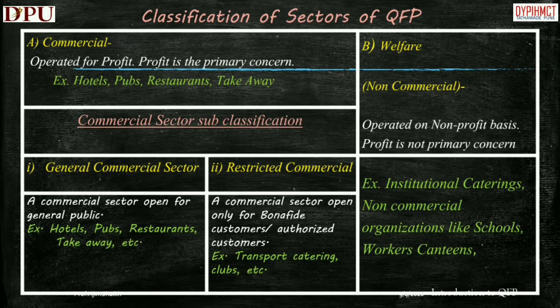The commercial sector is further classified as the general commercial sector and the restricted commercial sector of quantity food production. The general commercial sector is open for the general public with no restrictions — for example, hotels, restaurants, takeaways, etc. But in the case of the restricted commercial sector, only bona fide or authorized guests can avail the services — for example, railway catering, where only bona fide travelers can avail food facility in the train. Similarly, in clubs, only bona fide members are allowed to avail the service.